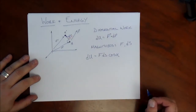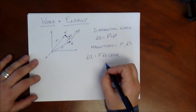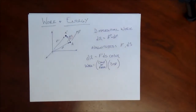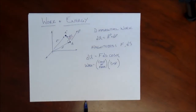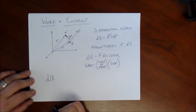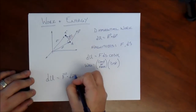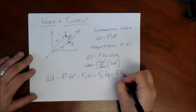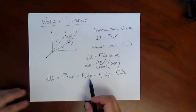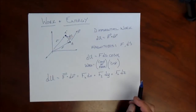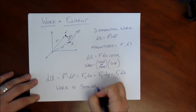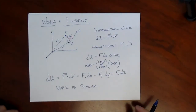We can write the scalar work du as F ds cosine of the angle. So work equals some component of force times the displacement — that's probably a notion you're familiar with, but it's a little more subtle than that. In rectangular coordinates, the differential work du equals F_x dx plus F_y dy plus F_z dz. Note that work is a scalar, so we're not dealing with vectors.